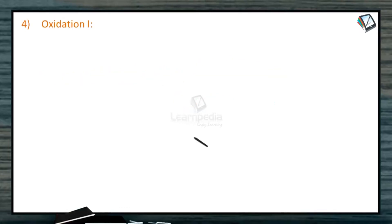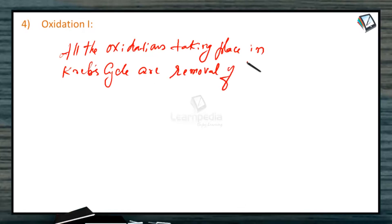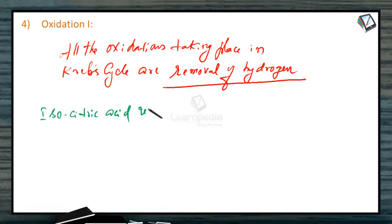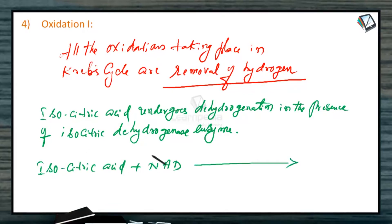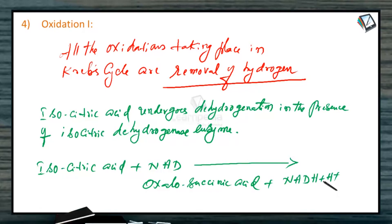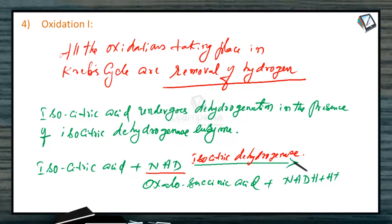The next reaction is the first oxidation. All the oxidations taking place in Krebs cycle involve removal of hydrogen, not addition of oxygen. In the first oxidation, isocitric acid undergoes dehydrogenation in the presence of isocitrate dehydrogenase. The reaction is: isocitric acid plus NAD produces oxalosuccinic acid plus NADH₂. Remember, whenever NAD participates, the enzyme name will be dehydrogenase, with a prefix from the substrate on which the enzyme acts.